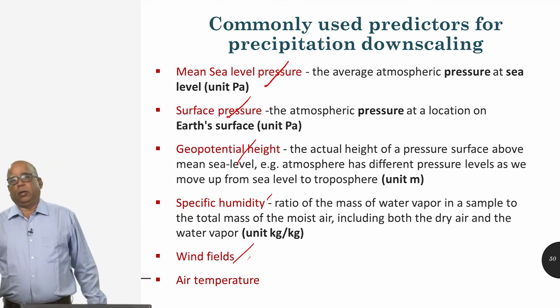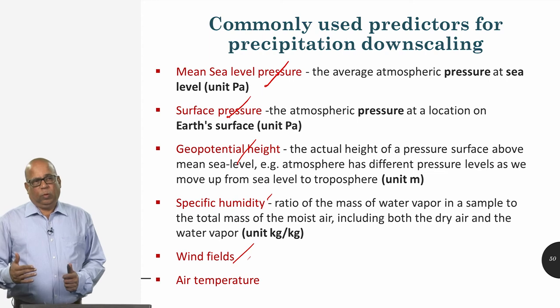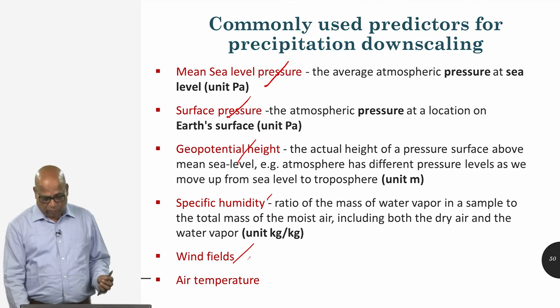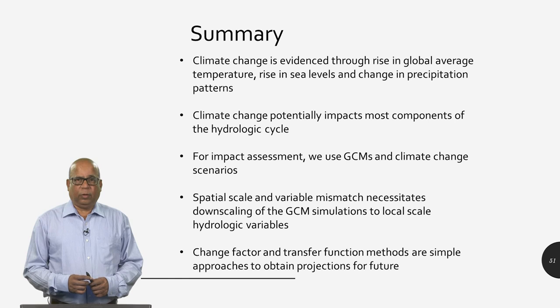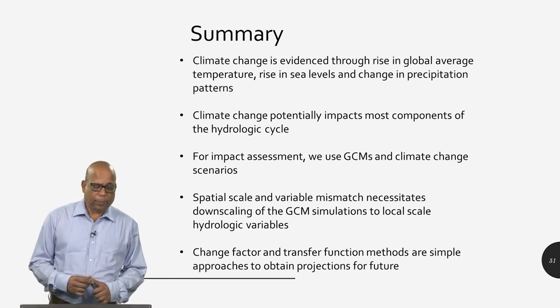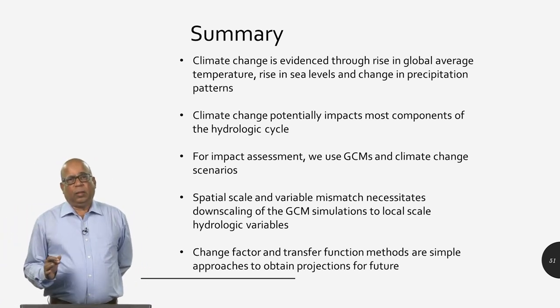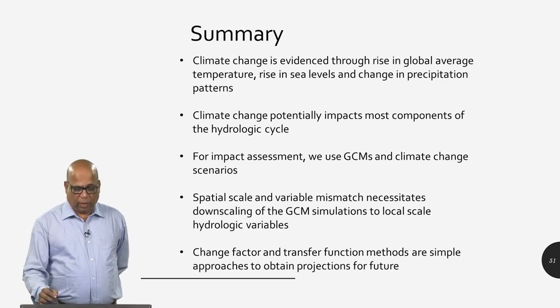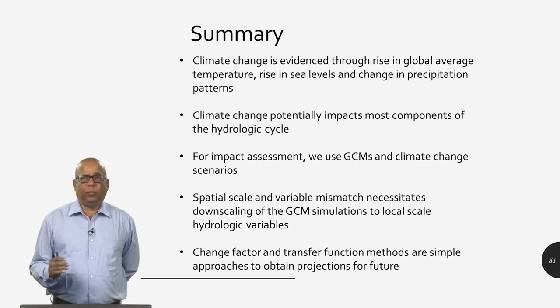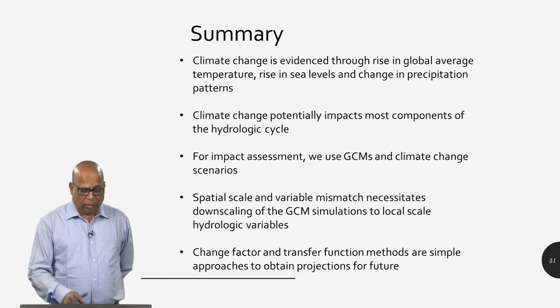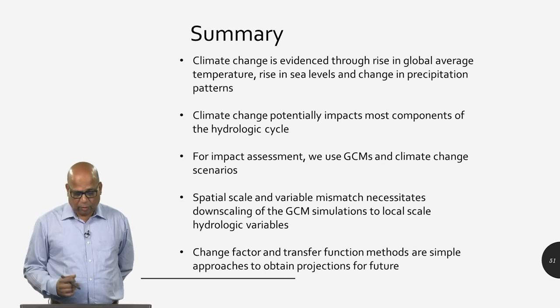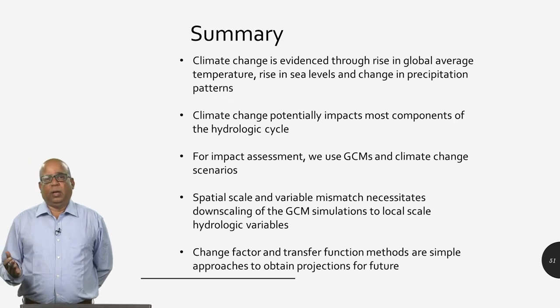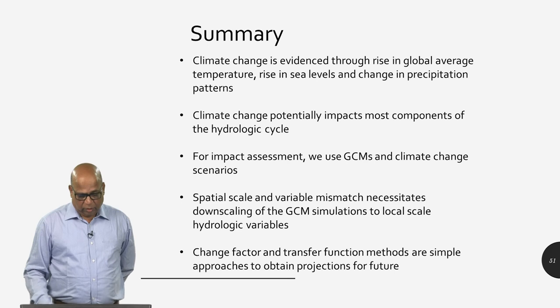In the next class, I will use these simple methods to look at the projections of several hydrologic variables including stream flow, evapotranspiration, and also how the magnitudes and frequencies of droughts and floods are likely to change. In summary, this lecture has covered: evidence of climate change happening in India; hydrologic cycle components — especially stream flow and evapotranspiration — potentially affected by climate change; the use of GCMs and climate scenarios for projecting these variables; the spatial scale and variable mismatches addressed through downscaling; and two downscaling methods — the change factor method and the transfer function approach. We will continue this discussion in the next lecture. Thank you for your attention.